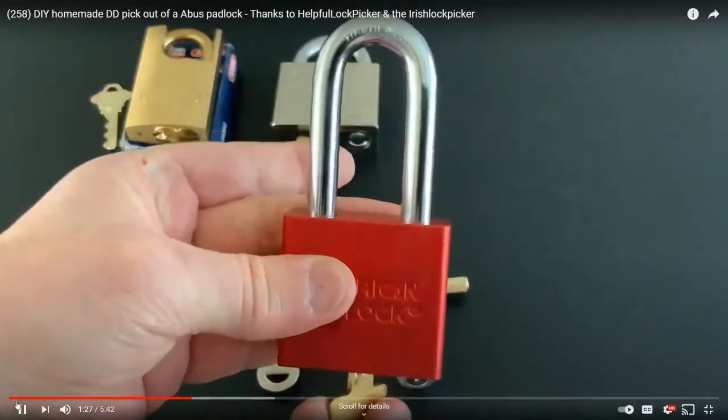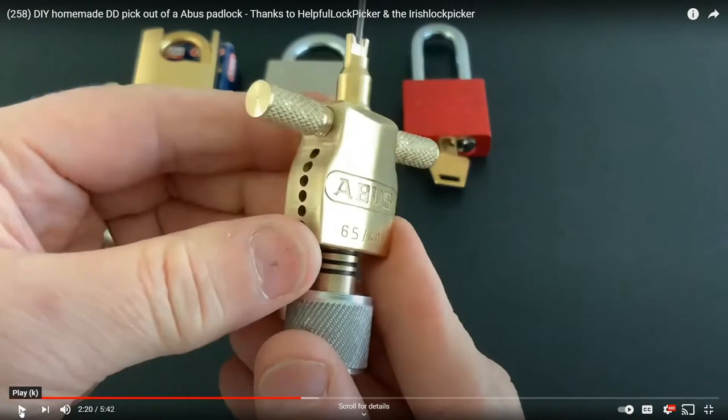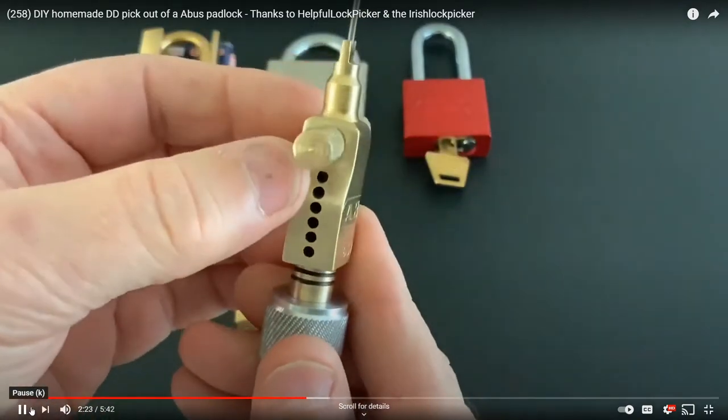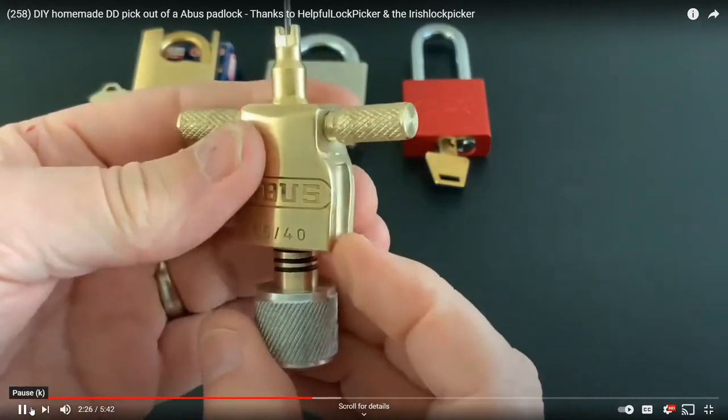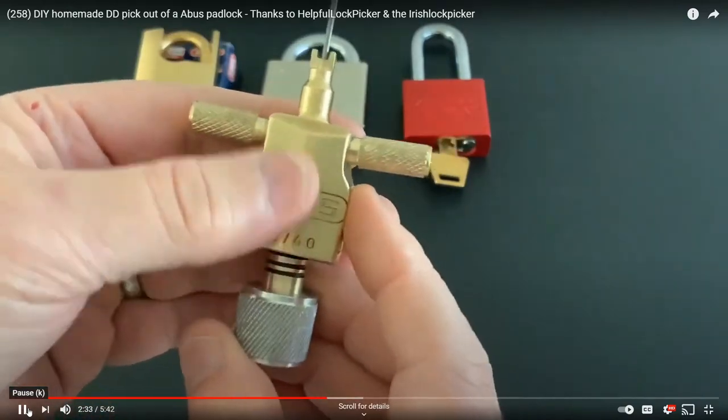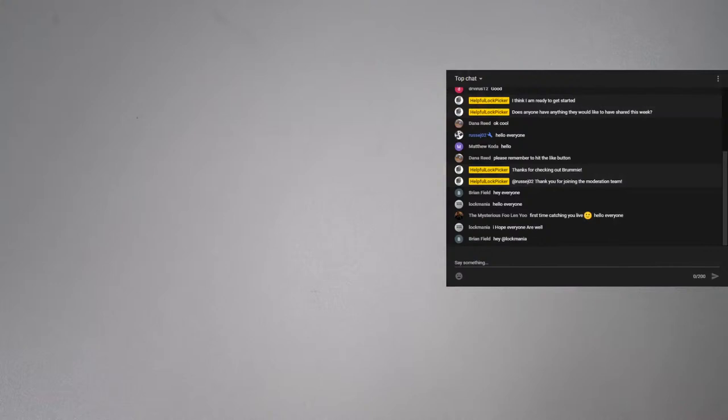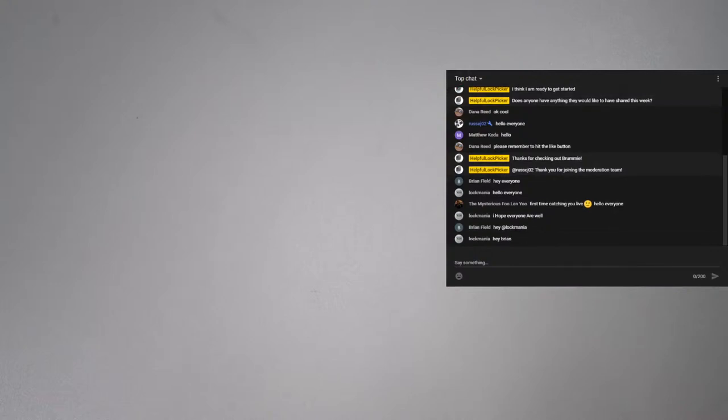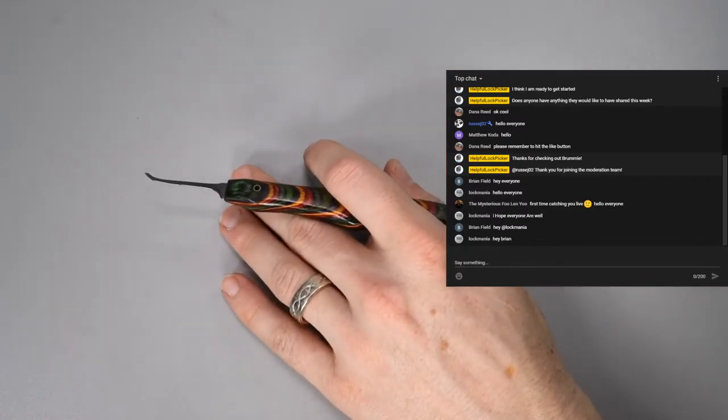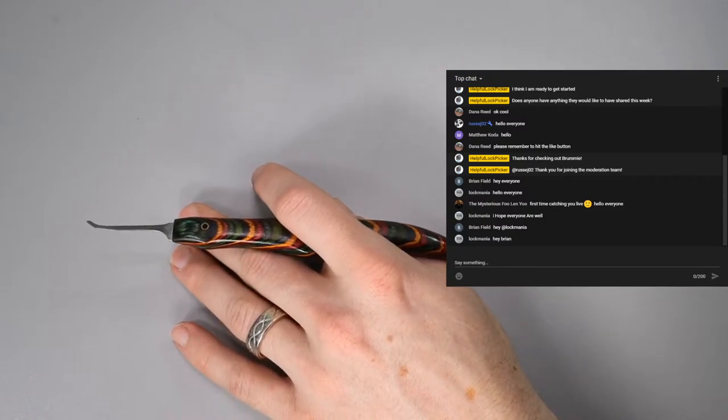All right so I'm going to try to skip ahead a little bit on his video. I just want to show you the pretty cool tool he made. Just look at this really cool disk detainer tool he made out of an Abus lock. So if you want to see more on that really cool design, go to his channel and I will put a link to that in the video description. I want to say Brummie thank you for doing some cool things in Locksport and big congratulations to you on winning my giveaway.